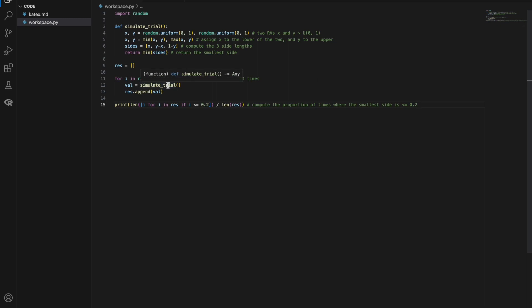Now, 1 million times, we simulate a trial and add the value of that trial to our results list. And we compute the proportion of values where the minimum was less than or equal to 0.2 to the length of the entire results list. And we are looking for a value close to 0.84, which is what we derived the theoretical value to be. Let's see how close we are.